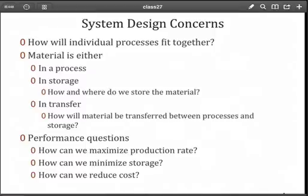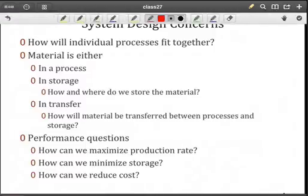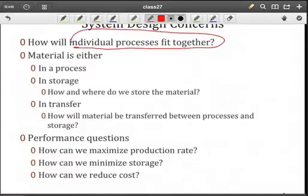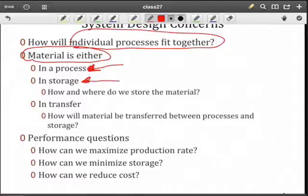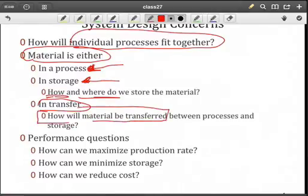Some of the concerns that you should have at this point is, first of all, all those processes that we've designed in the process planning stage, how will they fit together? And when we start viewing material through the overall system now, not in the process itself, but what kind of state would describe that material? One way to look at it is to say, well, the material could be in a process going through that transformation, or it could be sitting in storage somewhere. And if that's true, how and where do we store the material? Do we store it right next to the process? Do we store it in a separate work in process area? The other state we could be in would be transfer. Now, these are the only possibilities. Either I'm in the process, in storage, or I'm in a transfer. If we're going to transfer the material, then we have to answer the question, how will that material be transferred?